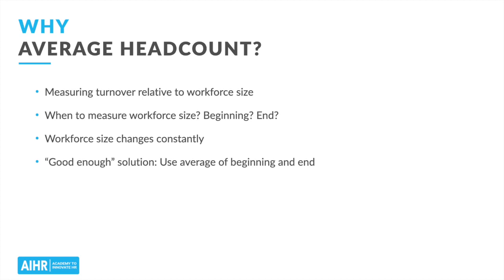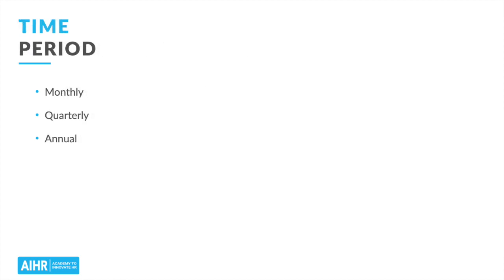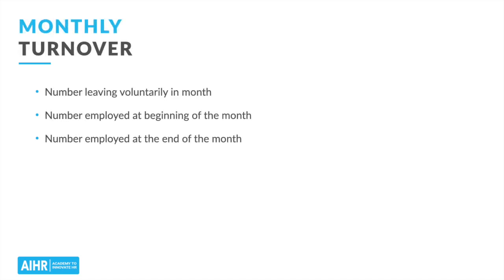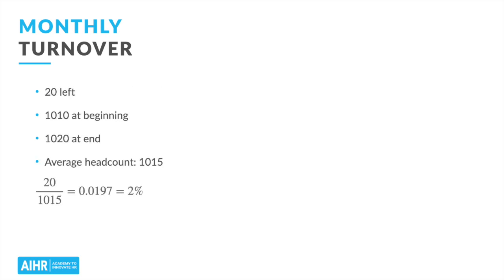You have the essence of the turnover metric, so now let's build on that by creating some turnover metrics for three different time frames: monthly, quarterly, and annually. We'll start with monthly. Let's suppose it's May and we're being asked for the turnover rate from April. We need three numbers: the number of people who left during April, and then for the denominator, the number employed at the beginning of the month and the number at the end of the month. Let's say 20 people left voluntarily during April, we had 1,010 at the beginning of the month, and 1,020 at the end. Plugging these values into our formula, we get 20 divided by 1,015 — our average headcount for that month, averaging 1,010 and 1,020 — which gives us a roughly 2% turnover rate for the month of April.